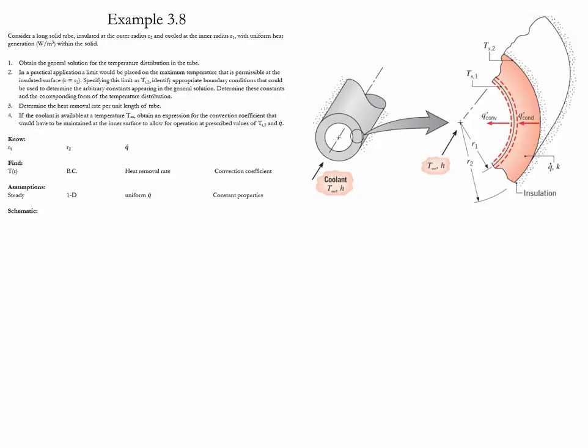We consider this problem to be one-dimensional, steady, with constant properties. The heat generation is uniform and constant within the solid. We start the analysis with the heat equation for cylindrical coordinate systems. This is the simplification after we consider steady state, one-dimensional, constant properties, and constant heat generation.